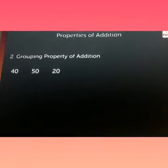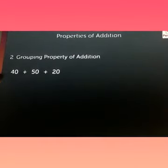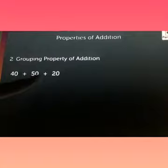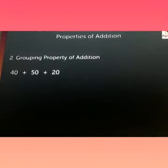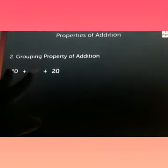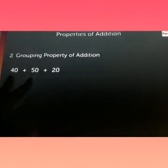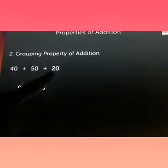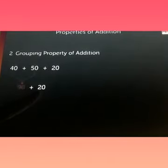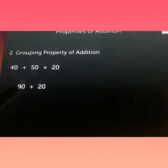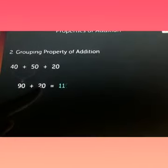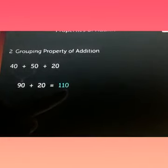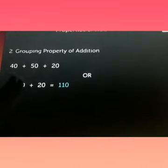The second property is grouping property of addition. Here's an example. If we have to add 40, 50, and 20, for example, if I add 40 and 50 first, I will get 90 as a result. Now in 90, we will add 20. 90 plus 20, the result will be 110. I have made a group and added.